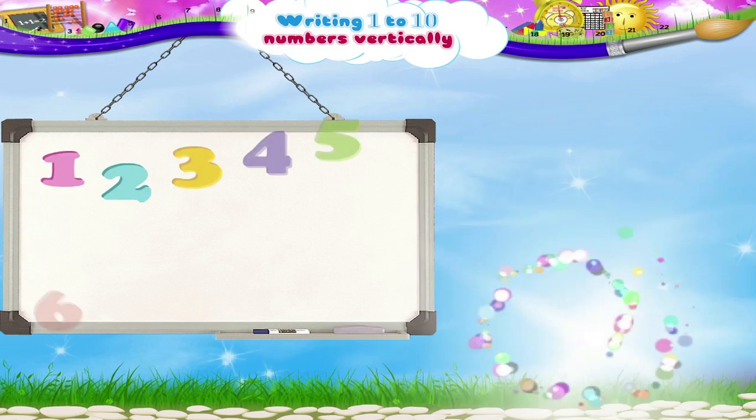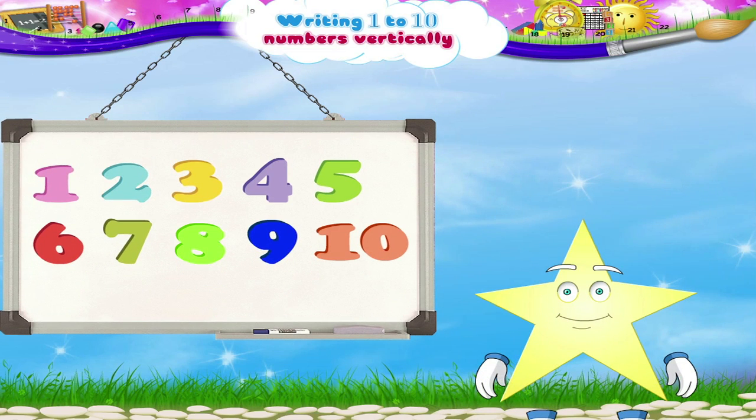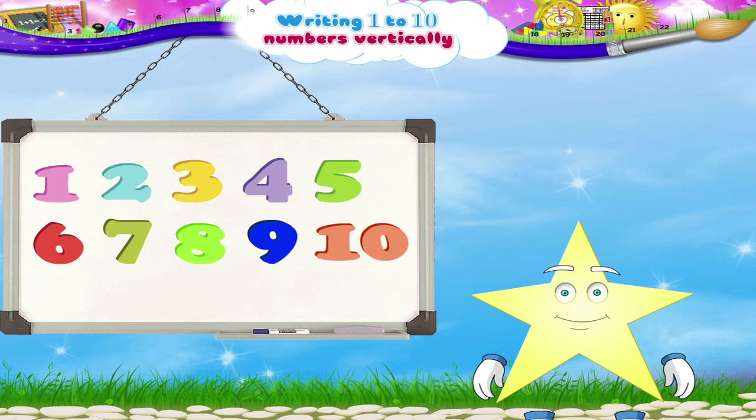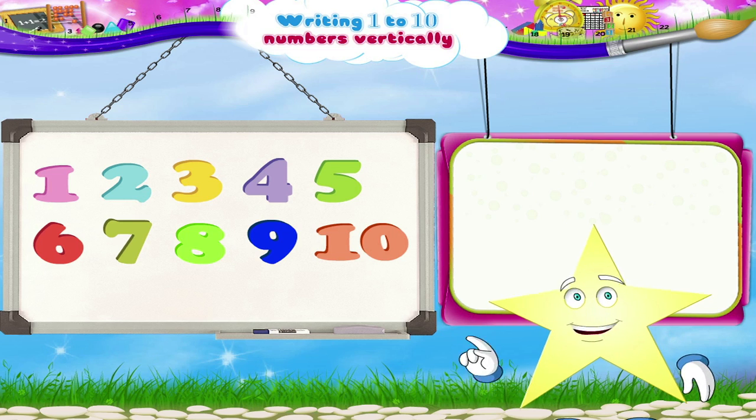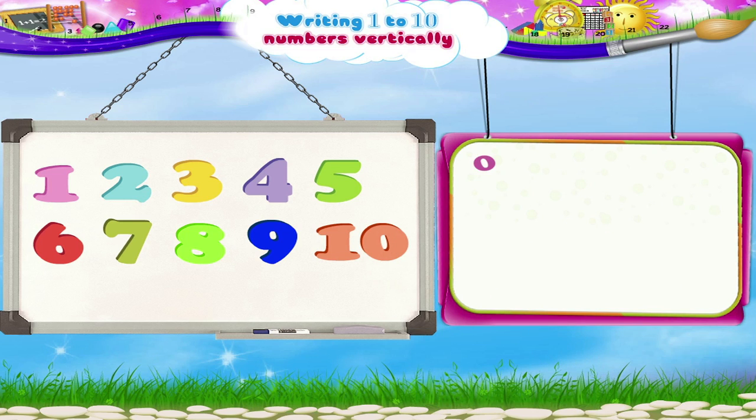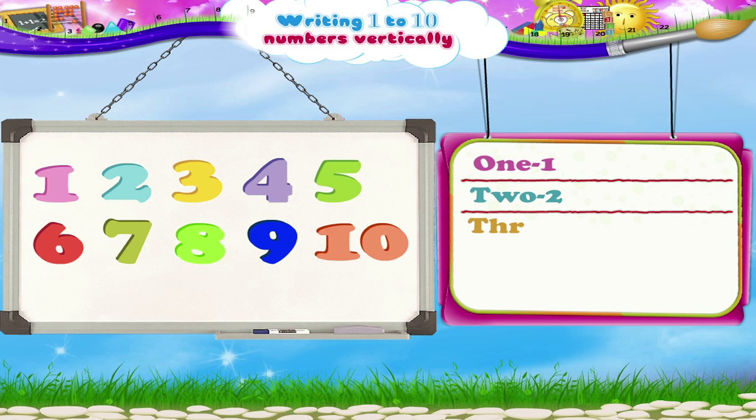Shall we write them out one more time, Study? Read the number aloud with me as we write. Begin: O-N-E 1, T-W-O 2, T-H-R-E-E 3, F-O-U-R 4, F-I-V-E 5.